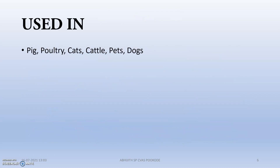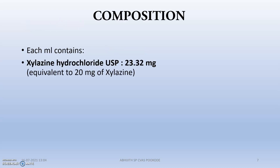Xylacine is mainly used in pigs, poultry, cats, cattle (though rarely), pets, dogs, and horses. Regarding composition, each ml contains approximately 23.32 mg, which is equivalent to 20 mg of Xylacine.